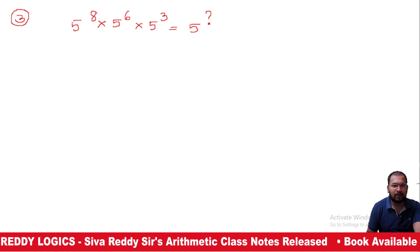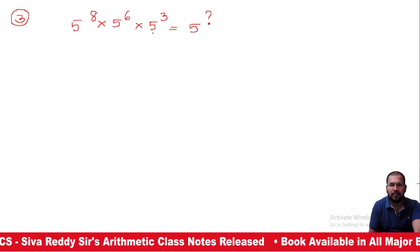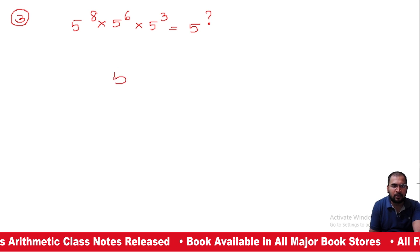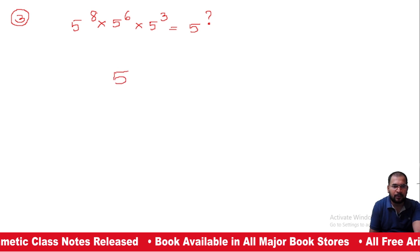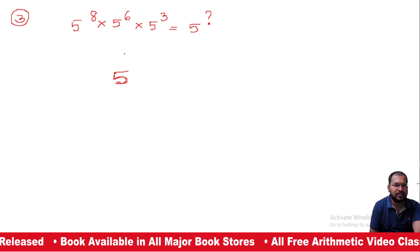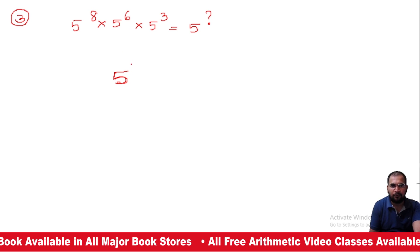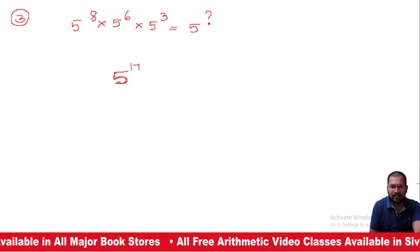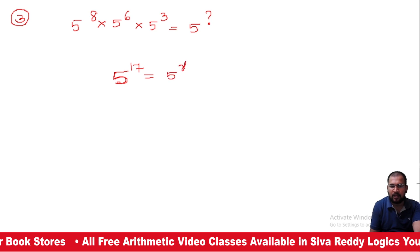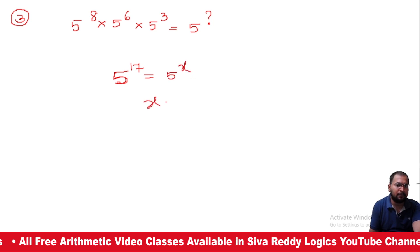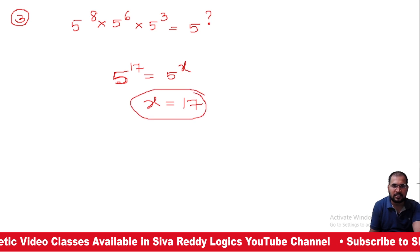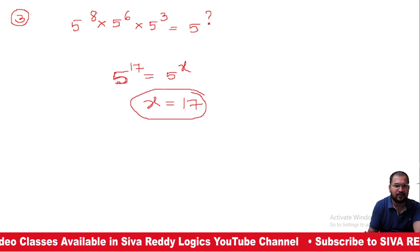Next, simplification: 5 to the power of 8, multiplied by 5 to the power of 6, multiplied by 5 to the power of 3, is equal to 5 to the power of what? Whenever bases are equal, we need to add powers. 8 plus 6 is 14, 14 plus 3 is 17. So 5 to the power of 17 equals 5 to the power of x. Whenever bases are equal, we equate powers. So x is equal to 17.